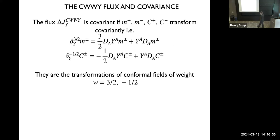Now let's come to covariance. The flux is covariant if all the quantities used to define it transform covariantly. In particular, for the mass aspect and the boundary gravitons, the transformations must be those of conformal primaries of weight 3/2 for M and minus 1/2 for C. If you take these formulas and plug them into the definition, you will see that the formula is actually covariant — it transforms exactly as a flux, an antisymmetric tensor. The transformation laws of these fields can be obtained simply by looking at the standard Lorentz transformation laws on coordinates and seeing the form they assume when you are very far away, at very large radius.